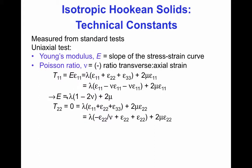Collecting terms and canceling epsilon_11, we see that E equals lambda times (1 minus 2 nu) plus 2 mu. That's one relationship relating E and nu to lambda and mu. We need another one, which we get by taking advantage of the fact that in uniaxial tension in the x1 direction, the normal stresses T22 and T33 are zero.